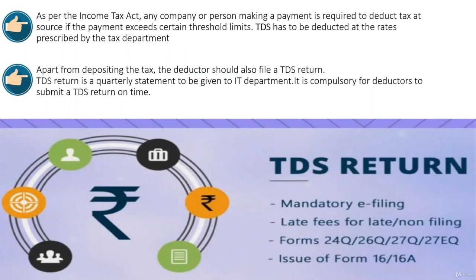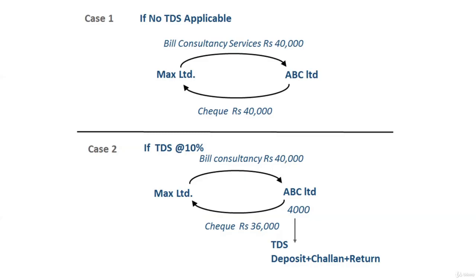You can furnish your returns in the form of 24Q, 26Q, or 27Q. To understand the concept of TDS, consider a normal case where TDS is not applicable: if Max Limited is providing consultancy services to ABC Limited for 40,000 rupees, then ABC Limited simply gives a cheque or cash of 40,000 rupees including the tax amount to Max Limited. This is the normal nature of payment.